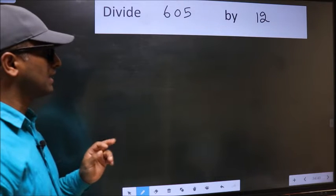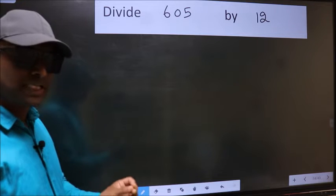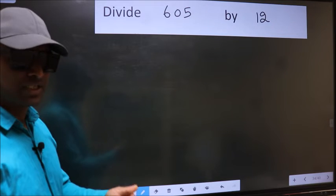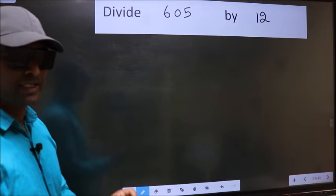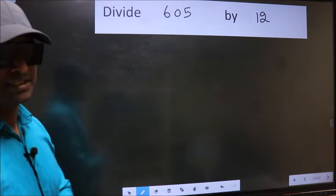Divide 605 by 12. While doing this division, many do this mistake. What is the mistake that they do? I will let you know. But before that, we should frame it in this way.